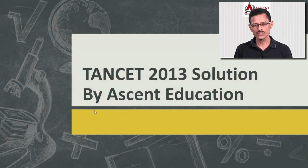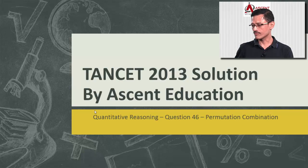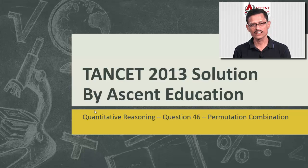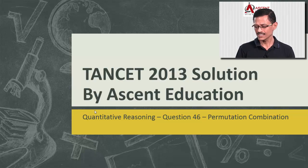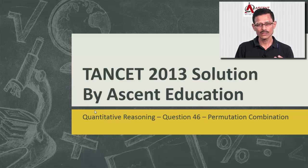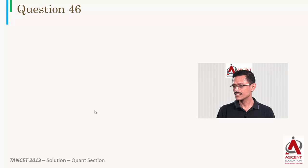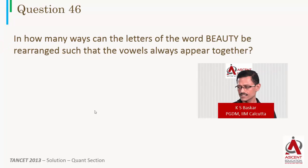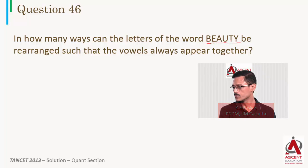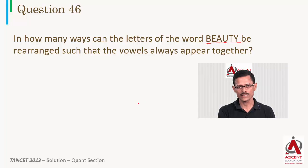This is a TANCET 2013 question — question number 46 of the TANCET 2013 paper. It is in the topic of permutation and combination. This topic is usually considered a difficult topic. The question reads: in how many ways can the letters of the word BEAUTY be rearranged such that the vowels always appear together?